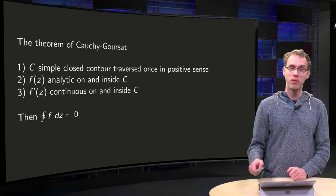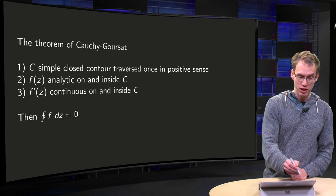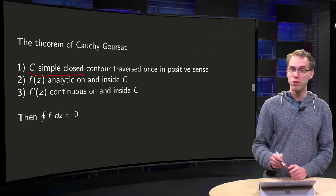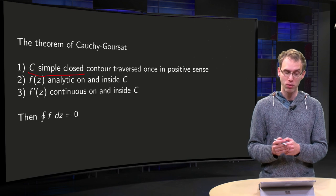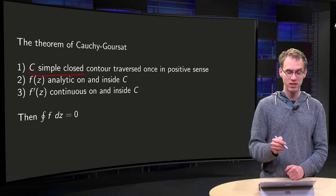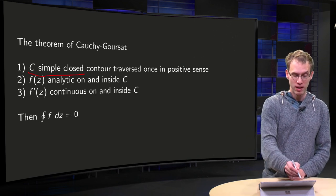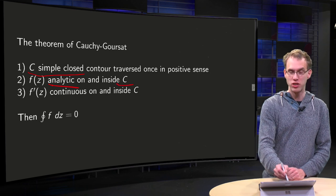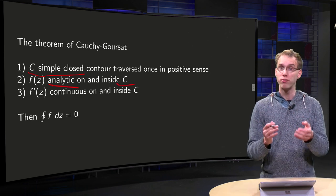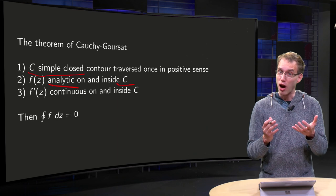So, what's the theorem? Our curve C has to be simple and closed. You have to traverse it once counterclockwise, so in a positive sense. F of Z has to be analytic on and inside C. That's the Goursat version. That one is quite hard to prove.